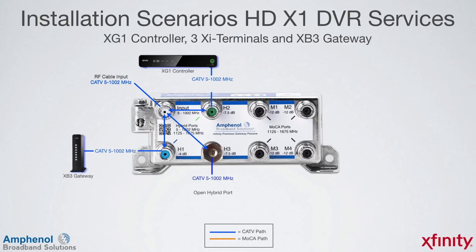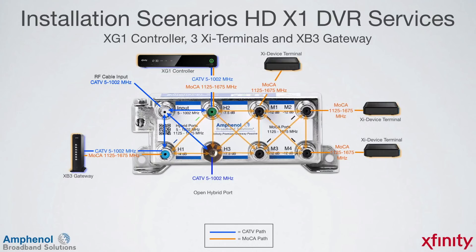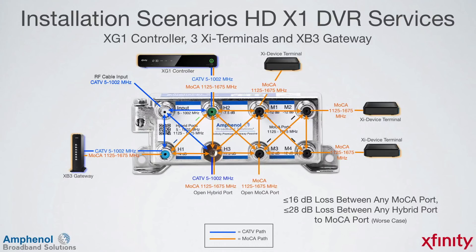Now let's look at the MOCA signal path. The XB3 gateway needs to transmit and receive MOCA frequencies to communicate to the other MOCA devices such as the XG1 controller, so the hybrid H1 port also passes MOCA frequencies from 1125 to 1675 MHz. The same applies to the H2 hybrid port, as the XG1 controller needs to communicate to the XI device terminals at the MOCA frequencies. The XI device terminals need to communicate with the XG1 controller at MOCA frequencies only — there's no need for traditional cable TV frequencies at these devices. The loss between any MOCA port is 16 dB or less, and 28 dB or less between any hybrid or MOCA port, providing excellent MOCA communications.